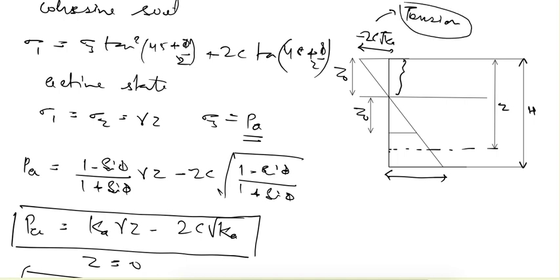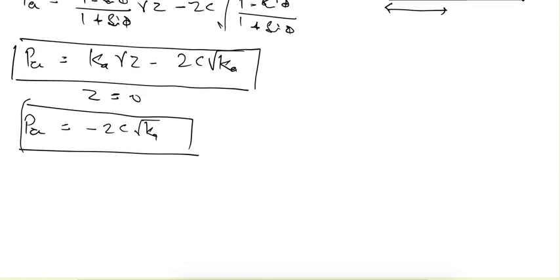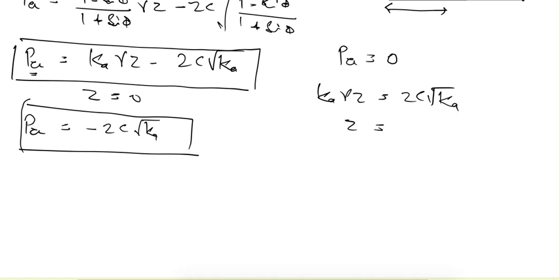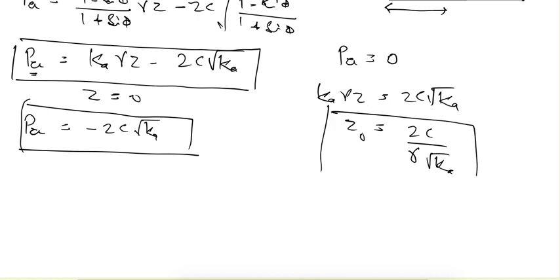If we find the point at which Pa = 0, setting Pa = 0 gives Ka·γz = 2c·√Ka, and from that z = 2c/(γ·√Ka). We denote this depth as z0, so z0 is the depth at which active earth pressure is equal to zero.